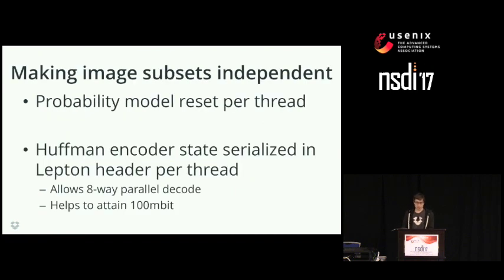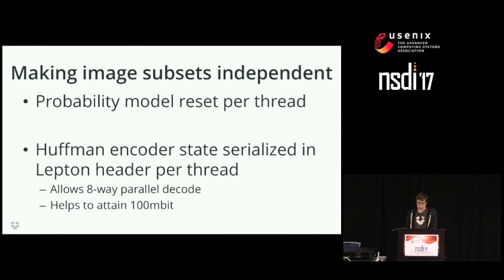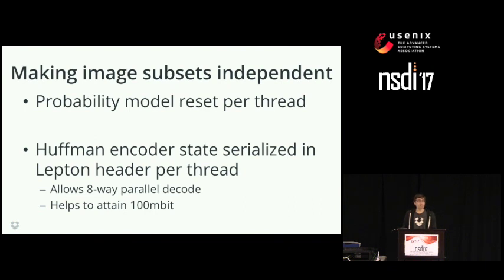Now we have a streaming probability model, but we had to parallelize the decode. Each thread starts with its own fresh probability model, which reduces compression somewhat but allows threads to be independent. The challenge is that JPEG files are not designed to be streamed — in some sections they do scanline-ordered delta encoding across pixels, and rows aren't even guaranteed to terminate on byte boundaries; they could have half-filled bytes. To address this and enable parallelized reconstruction, we serialize out the entire Huffman coder state so we can concatenate the results each thread produced and produce the final file. This also lets us support JPEG substrings, as long as we include the original header in the compressed Lepton file for each substring.